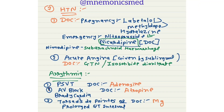Now learning drugs of choice for hypertension. For hypertension in pregnancy, drug of choice is labetalol, most preferred, then methyldopa and hydralazine. For hypertensive emergency, nitroprusside can be given but if drug of choice is asked it is nicardipine. Nimodipine is given in subarachnoid haemorrhage.